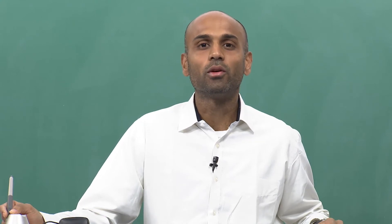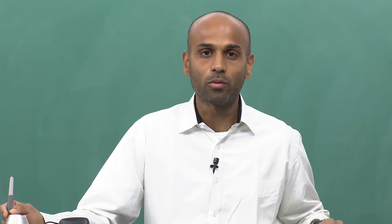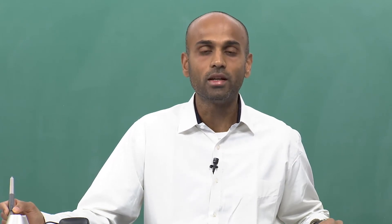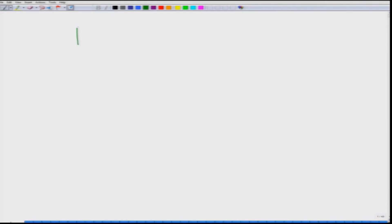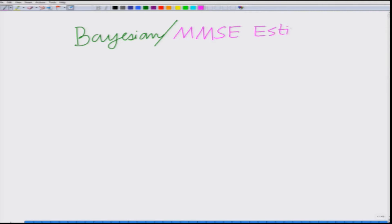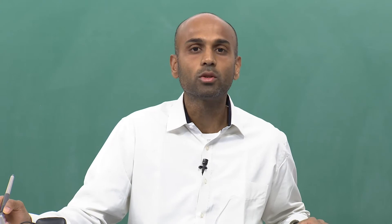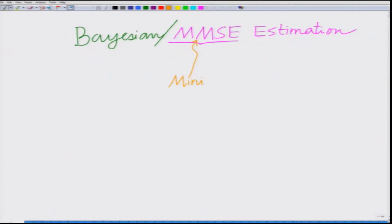Hello, welcome to this massive open online course on Bayesian or MMSE estimation for wireless networks. The title of this course is Bayesian estimation. We are going to look at different aspects of Bayesian or MMSE estimation, where MMSE stands for minimum mean squared error. It is essential that you familiarize yourself with this nomenclature.